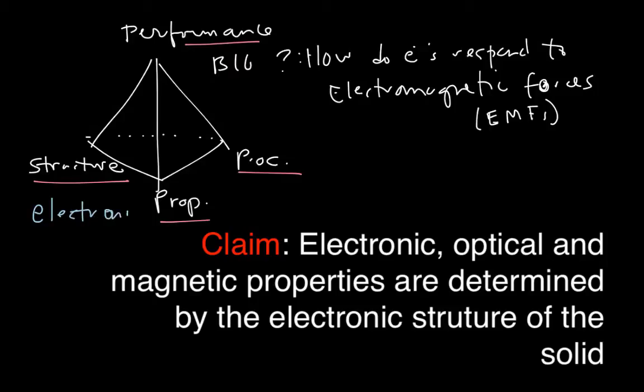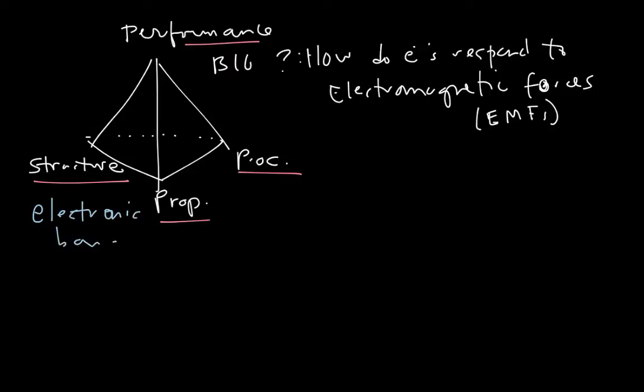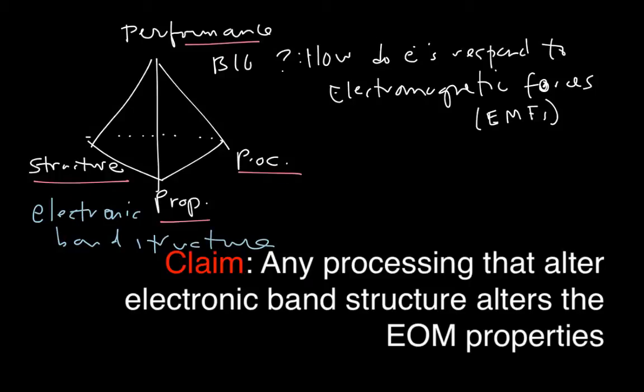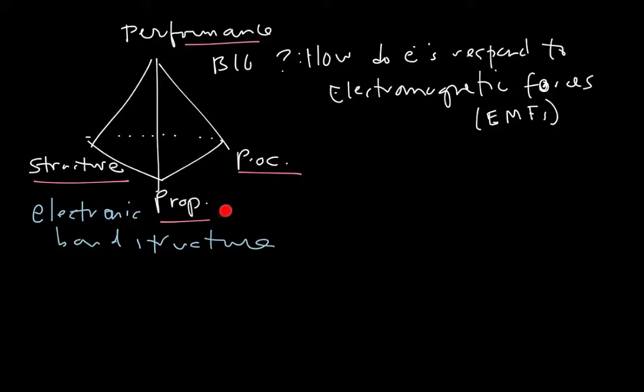And we won't say too much in this class about what the relationship is between the processing and the structure. Basically, what I said was anything of the processing that alters this is essentially going to alter these electronic, optical, magnetic properties. In class, the idea was to dig deeper into what the electronic band structure is.